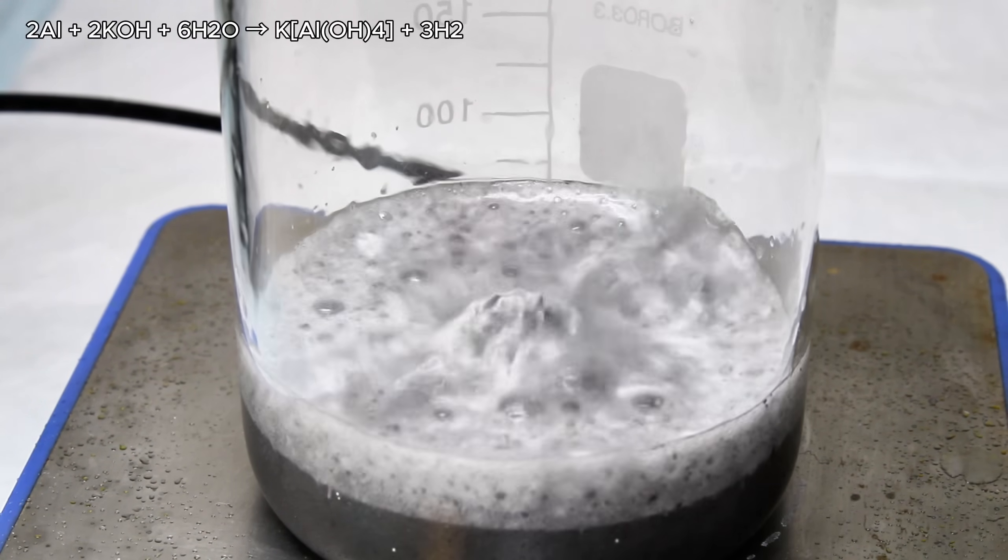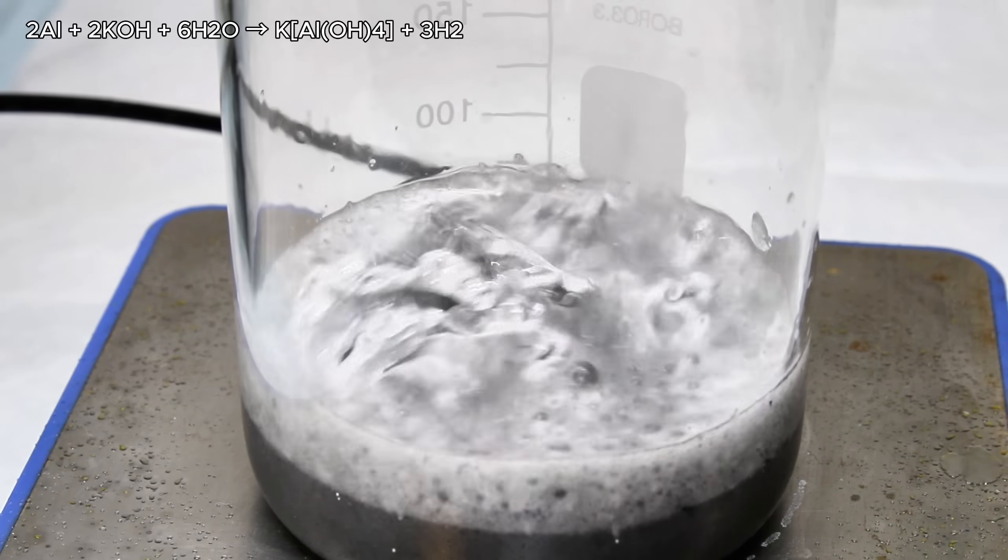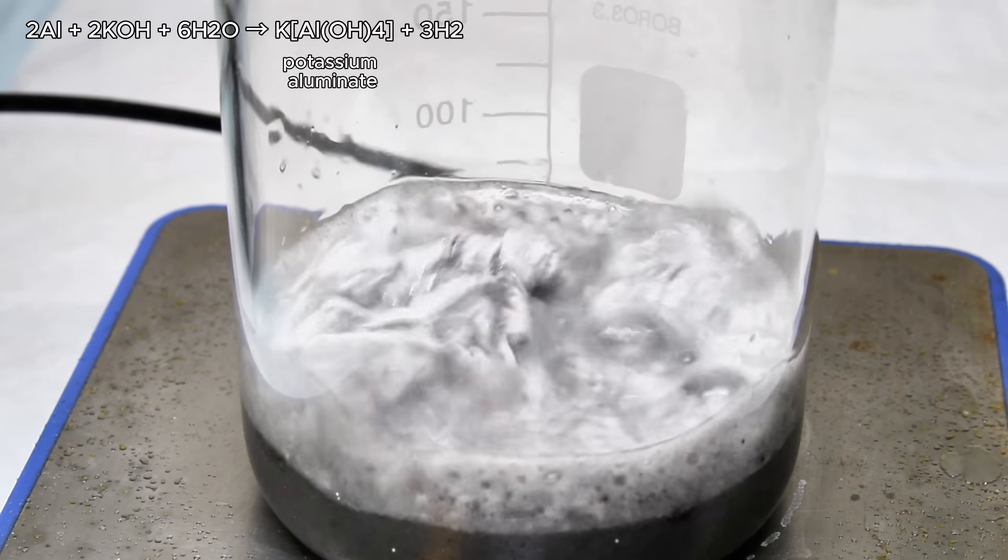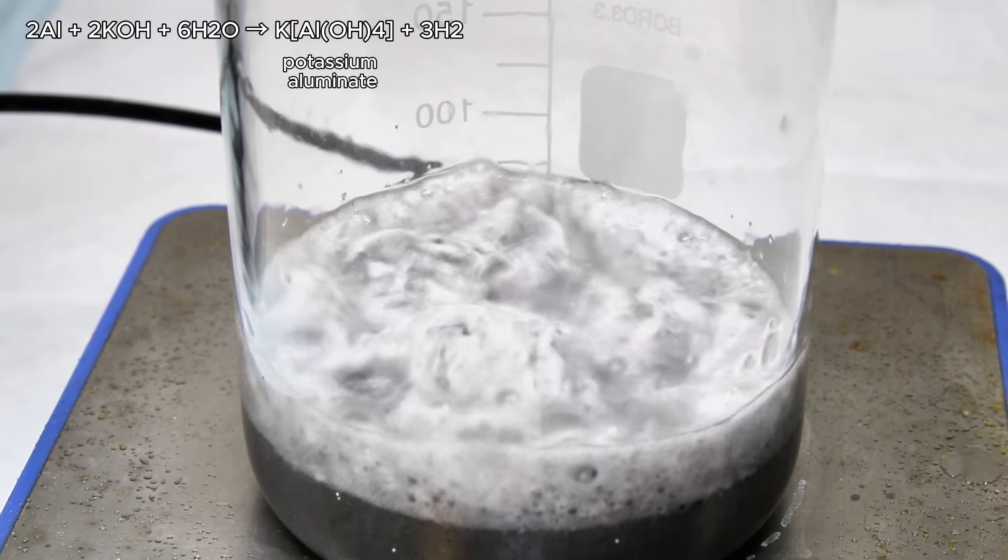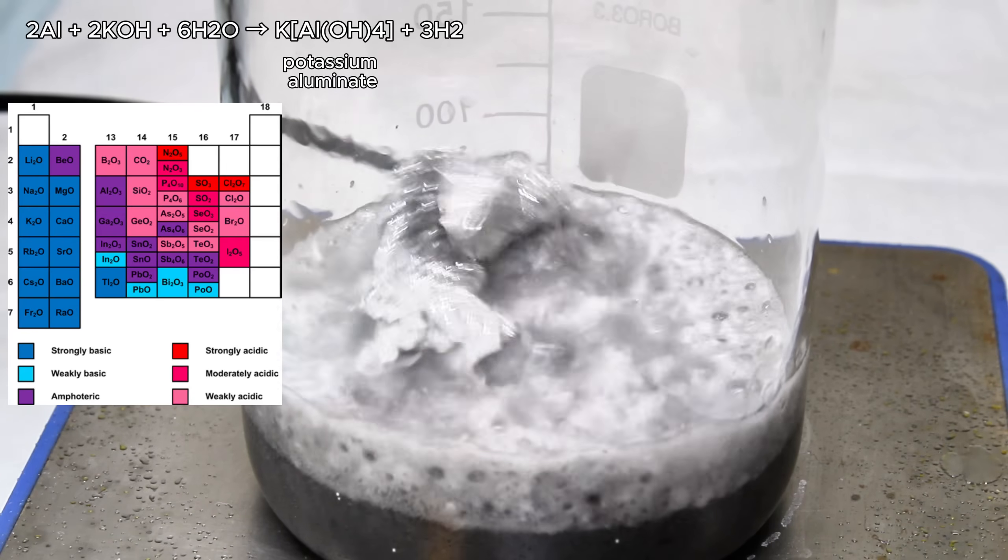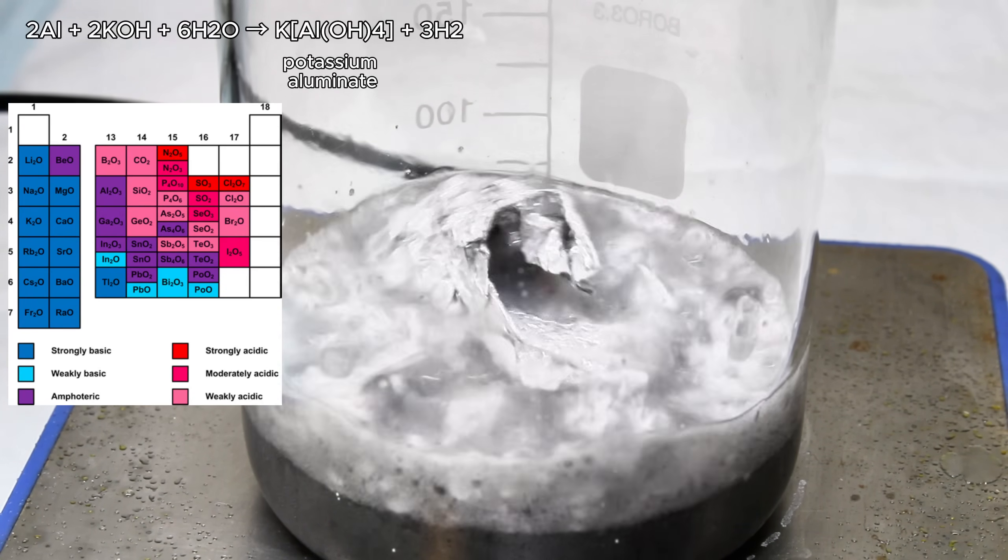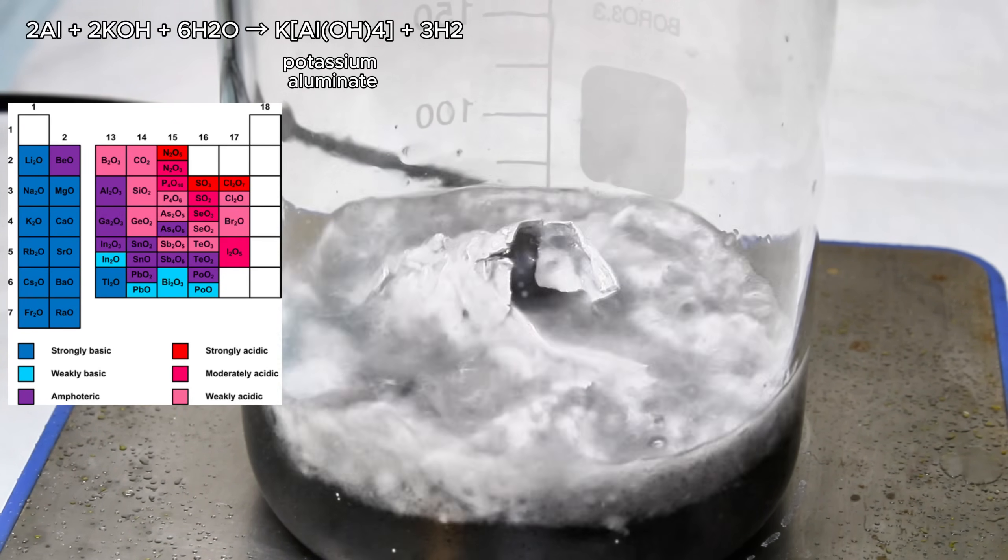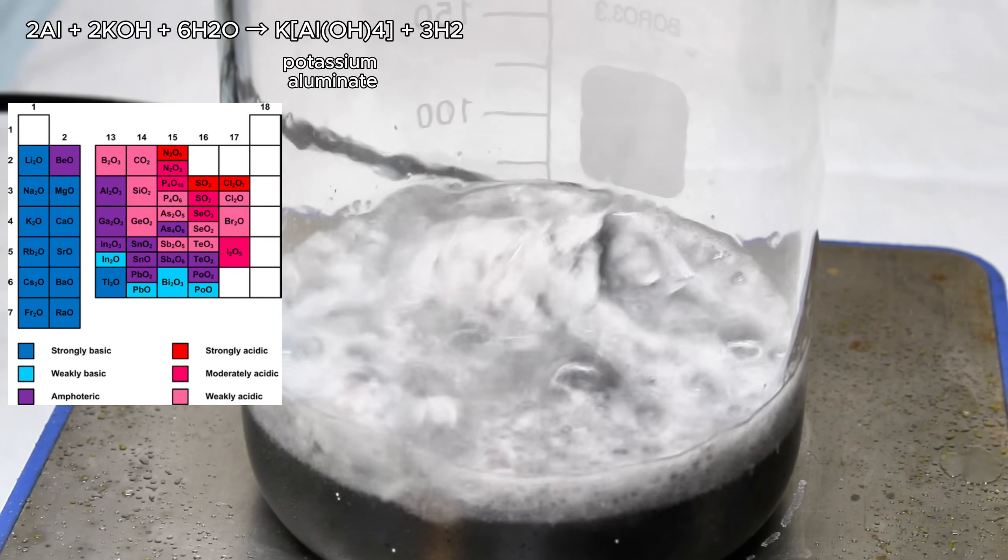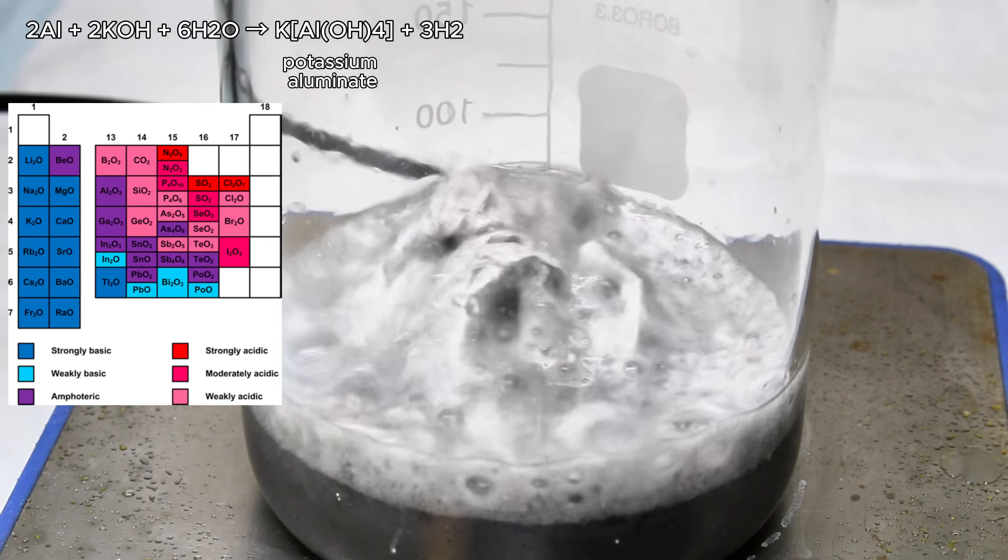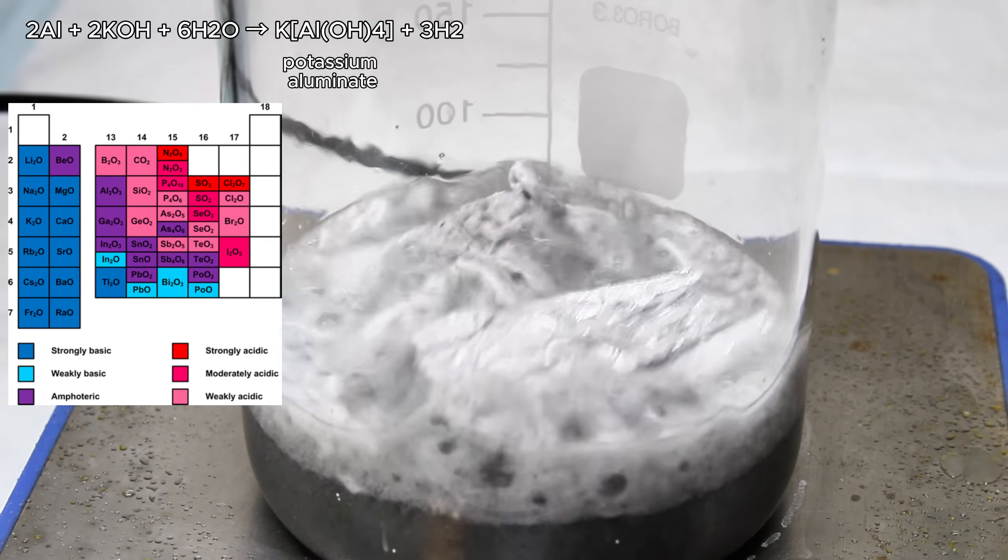The other product of this reaction, and the one we're after, is the salt potassium aluminate, which is possible because aluminum is what's called amphoteric. Amphoteric metals such as aluminum, tin, chromium, lead, etc., can form highly soluble salts upon reaction with bases, as well as acids, which I find pretty cool.